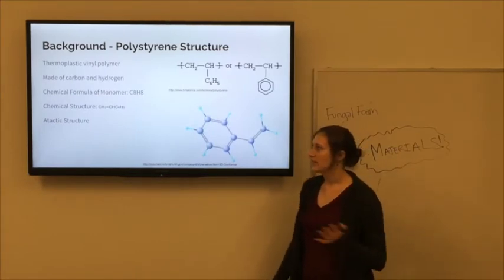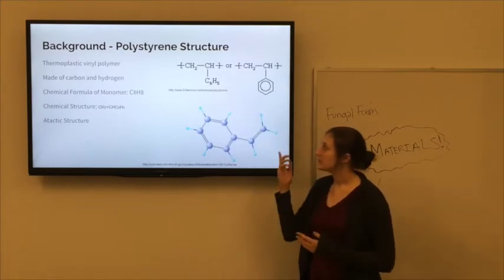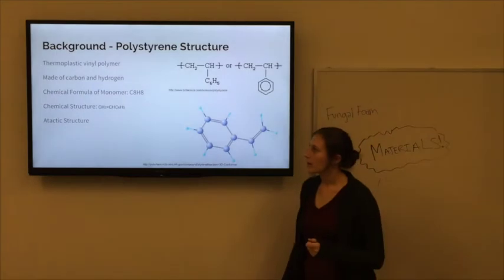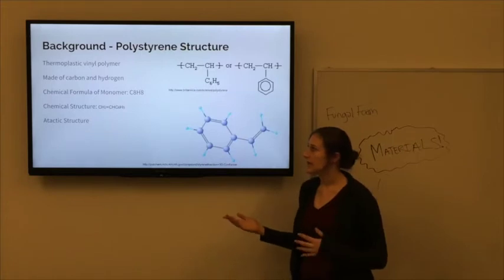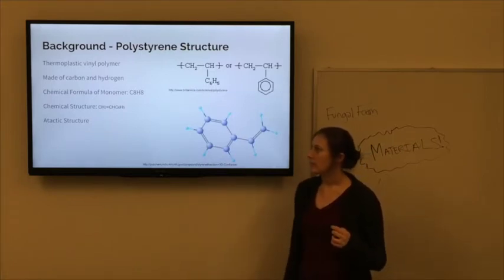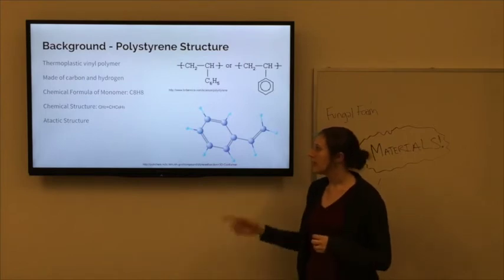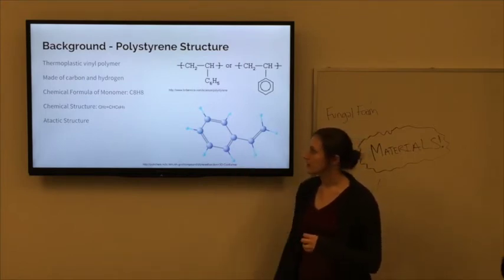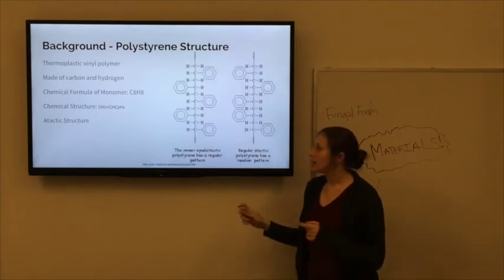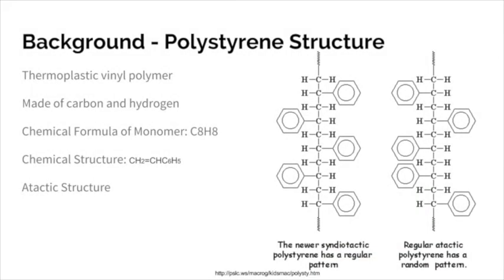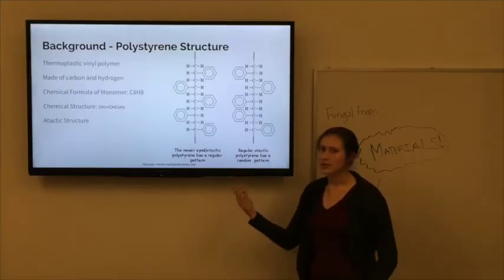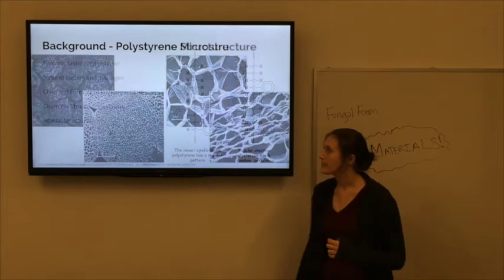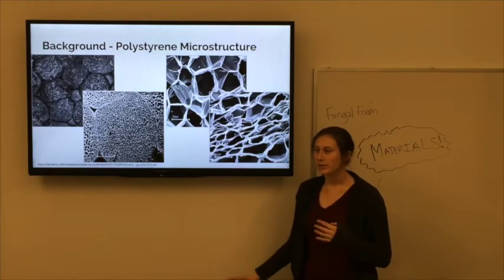So next we're going to talk about the structure of polystyrene. As Teo mentioned, it is a polymer, and you can see its monomer here, and this is the repeating unit. It's a thermoplastic vinyl polymer, and so it's only made of carbon and hydrogen atoms, and you can see the chemical formula and chemical structure here. This is an atomic view of the monomer. If you go to the next slide, you see that it has an atactic structure, which is completely random, but there's a different way to produce it that gives it a syndiotactic structure, so it has a predictable pattern.